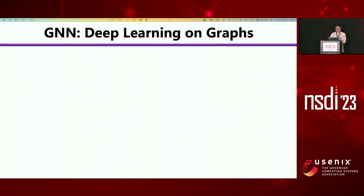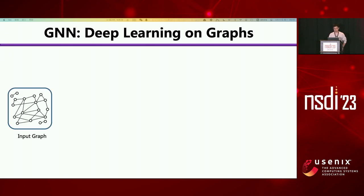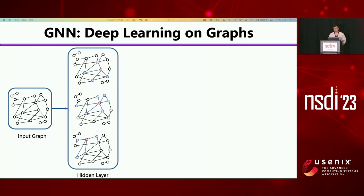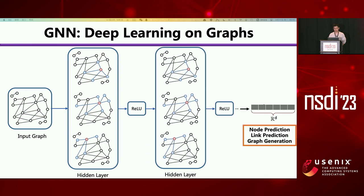The goal of the graph neural network is applying deep learning methods on graphs. The GNN model takes the graph as input, and each hidden layer uses some aggregation function and activation function. The final output of the model is embeddings of nodes, edges, and graphs. Embeddings are used for downstream label prediction or graph generation.